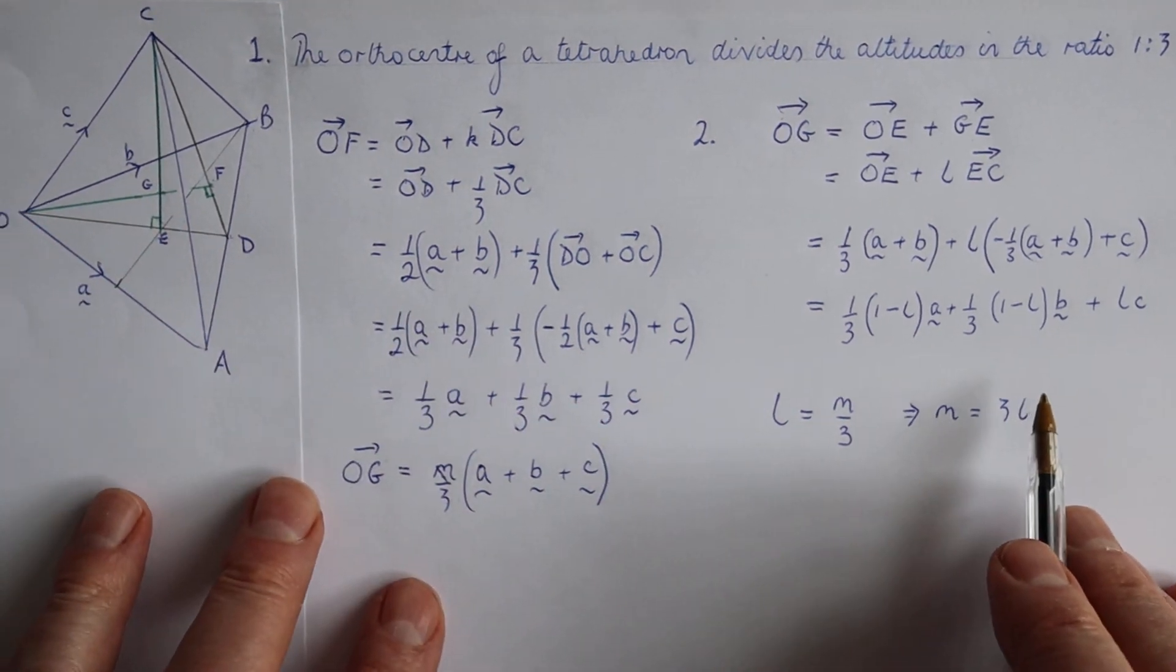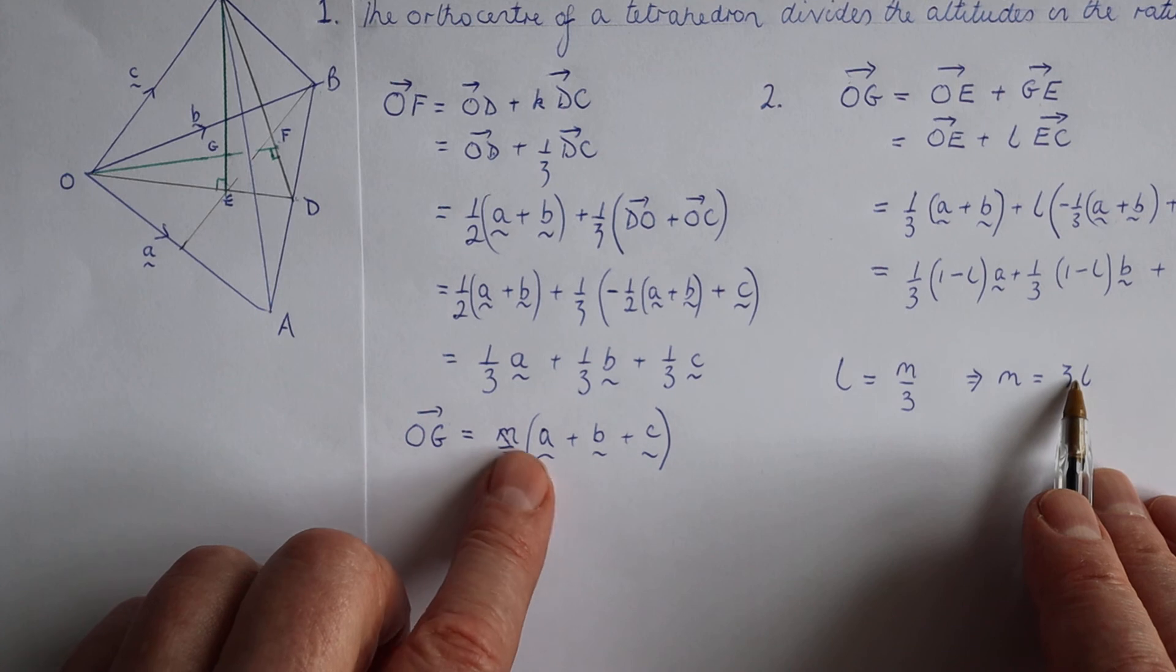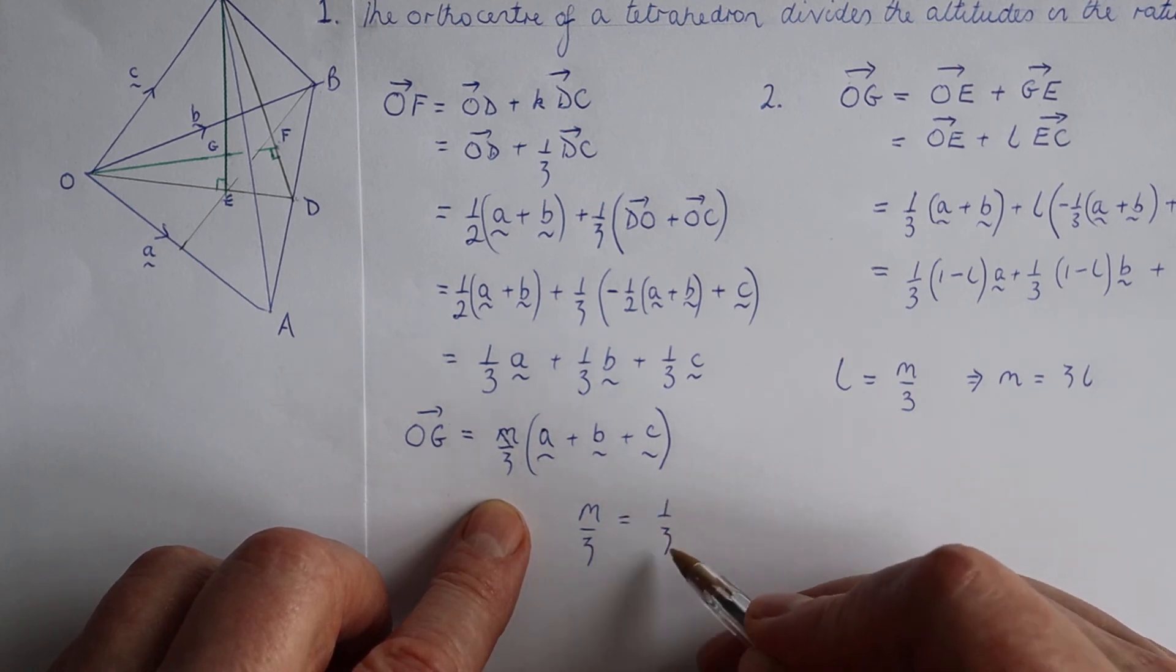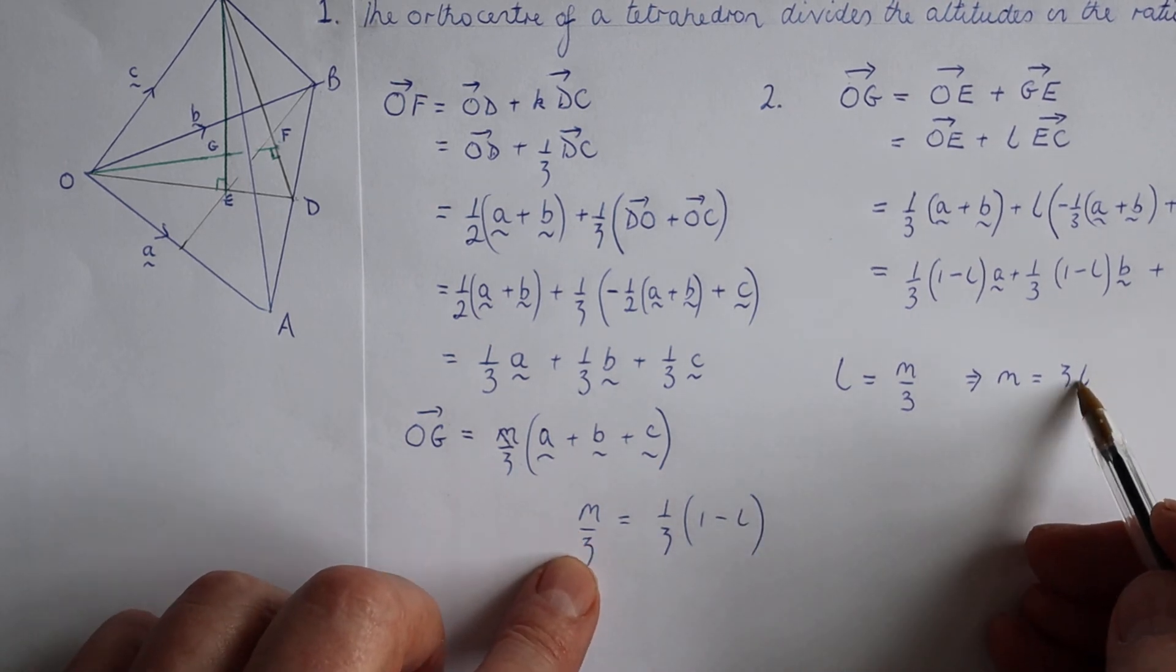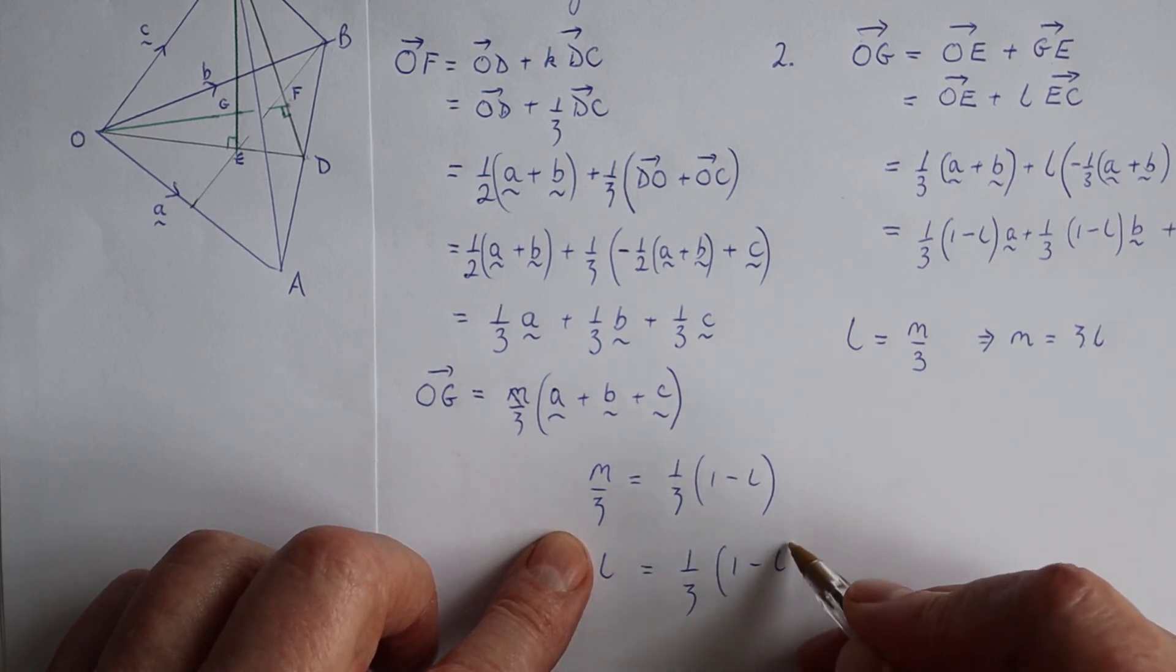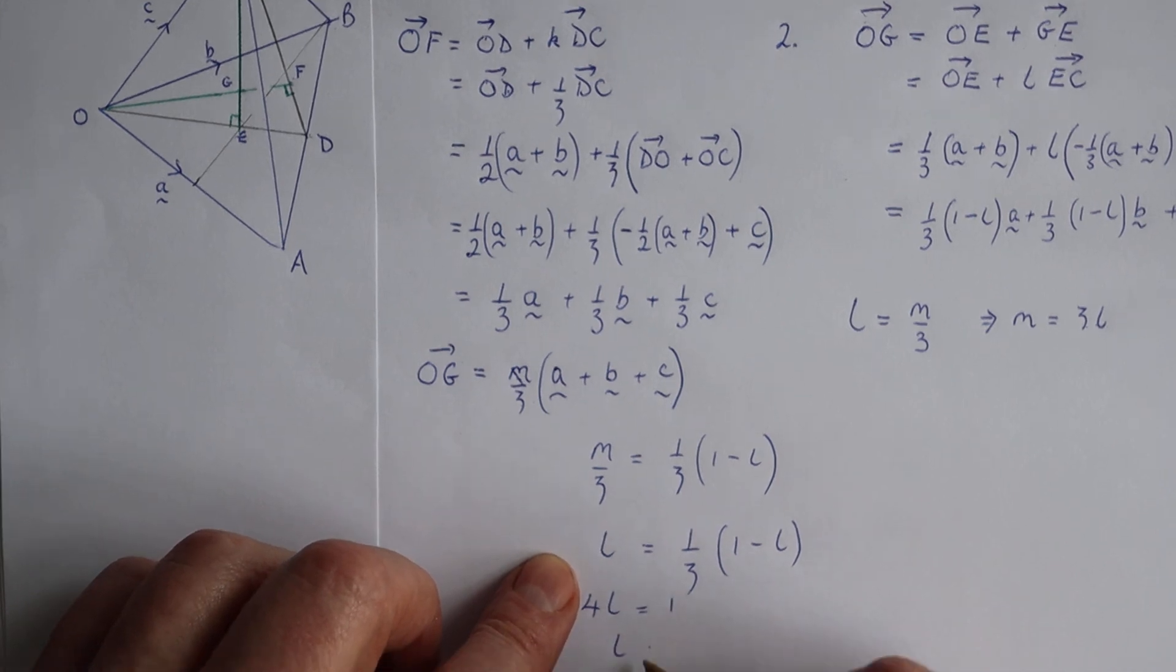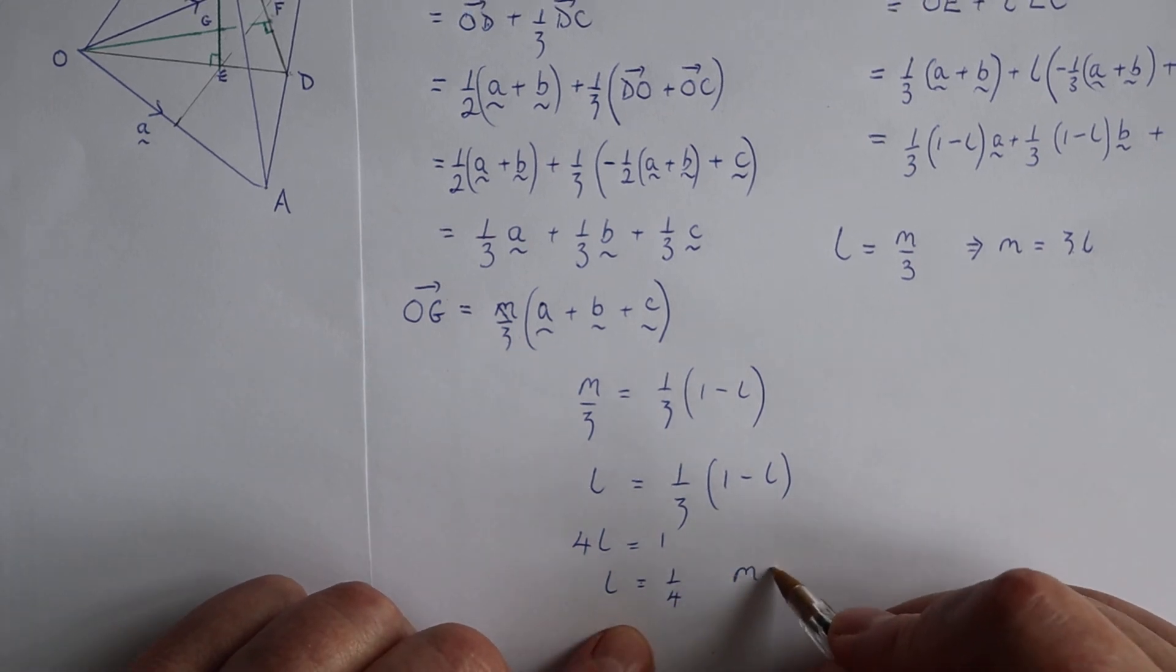But if we want to see the fraction, we can make a substitution, and we can say, look at the coefficient of A, and we've got M over 3 is equal to one third of one minus L. But this is 3L, M is 3L, we've discovered. So we've got L is equal to one third of one minus L. So 3L is equal to one times this, or 4L is equal to one. So L is going to be equal to one quarter as desired, and then M is going to be three quarters.